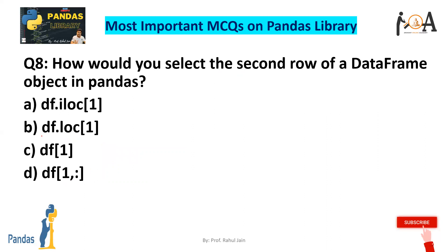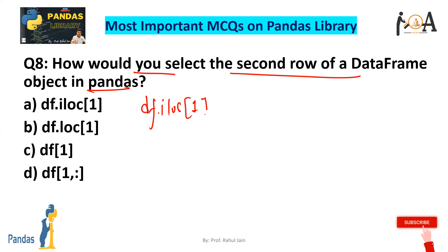Question 8: How would you select the second row of a DataFrame object in pandas? For the second row, we use df.iloc with index 1, since indexing starts at 0. This is the correct way for selecting the second row of a DataFrame object in pandas. So option A is the correct answer.